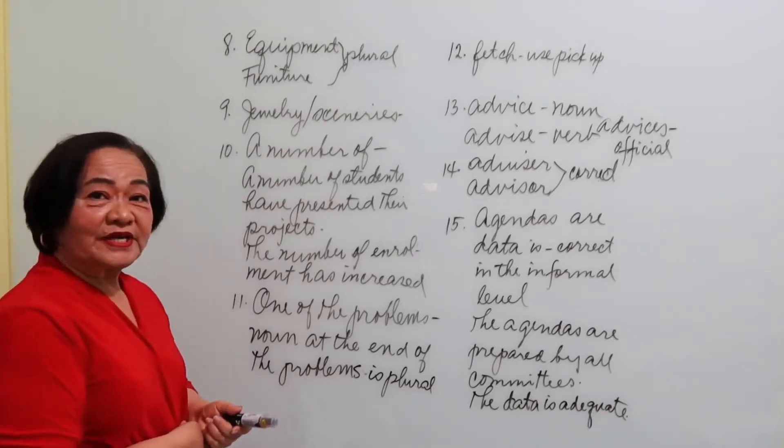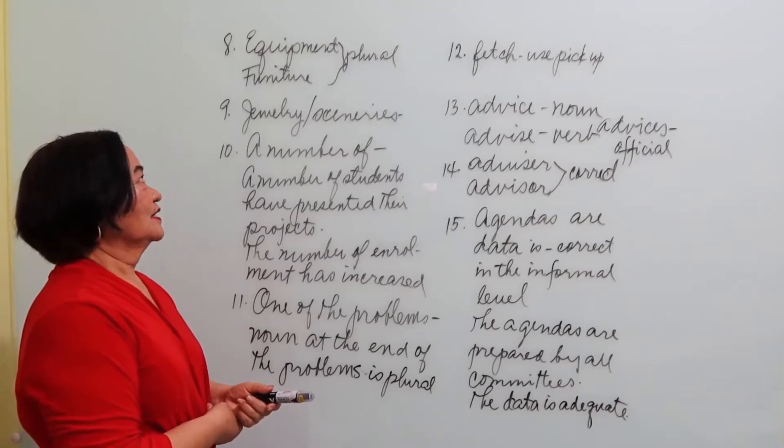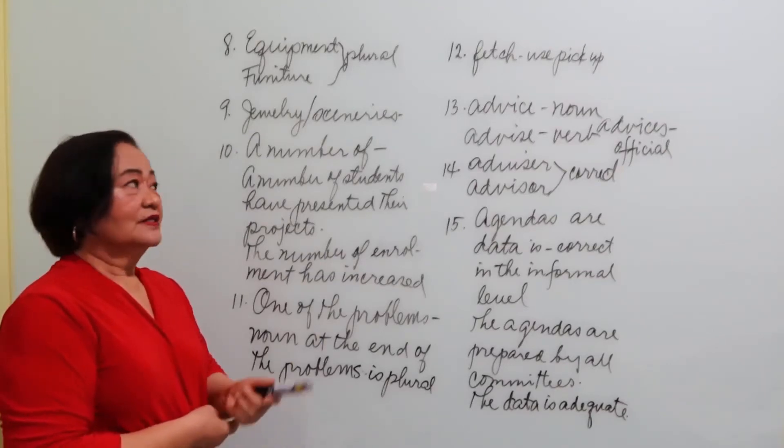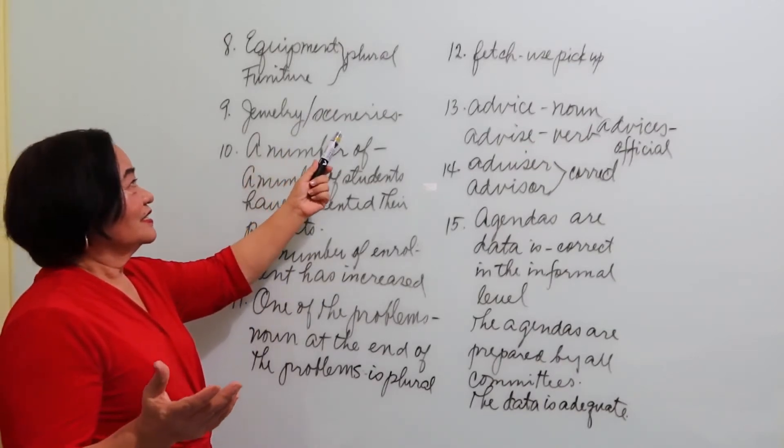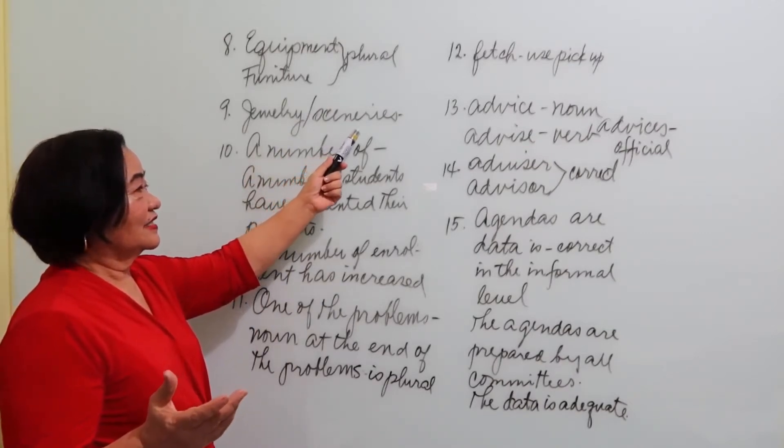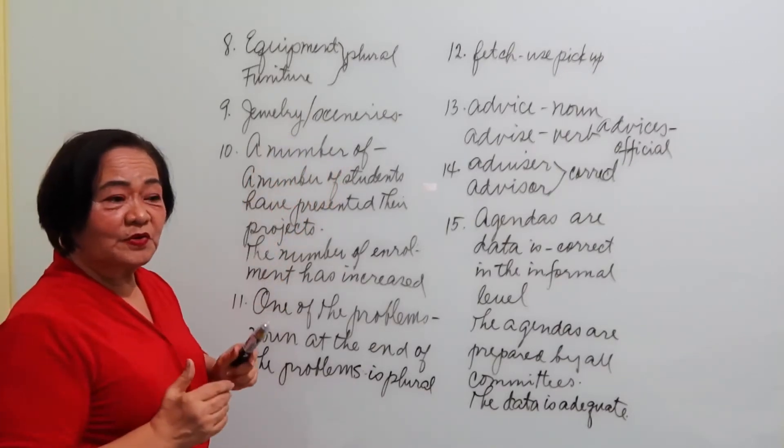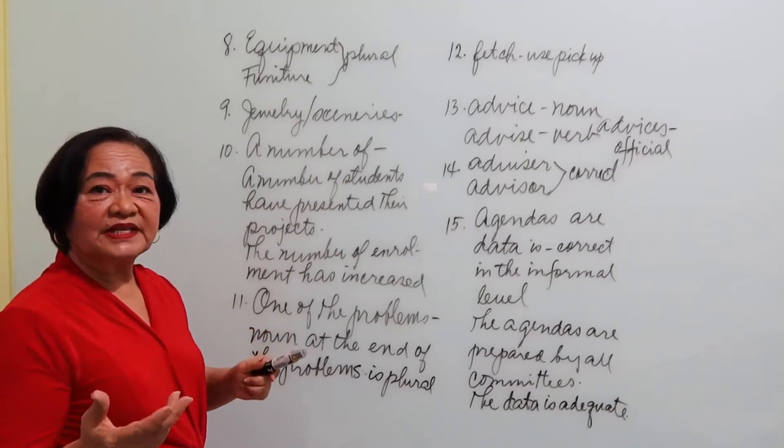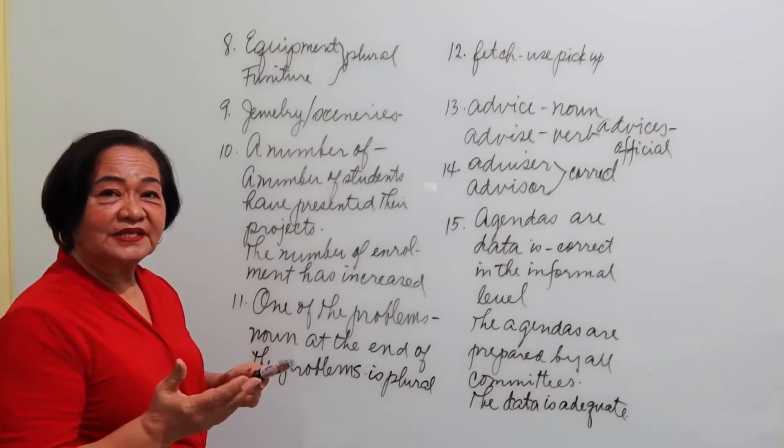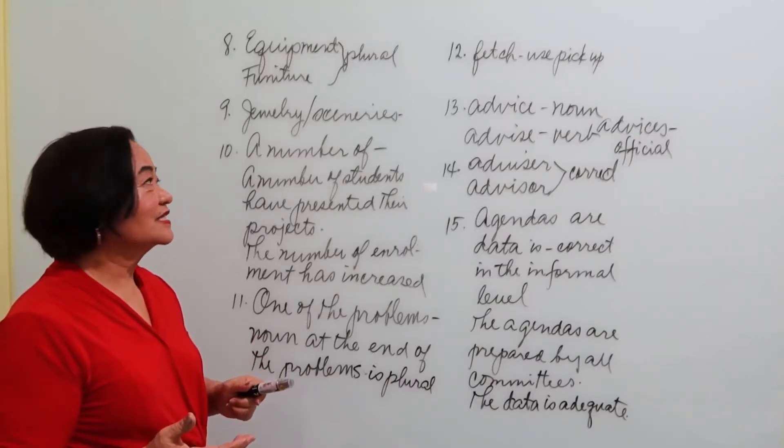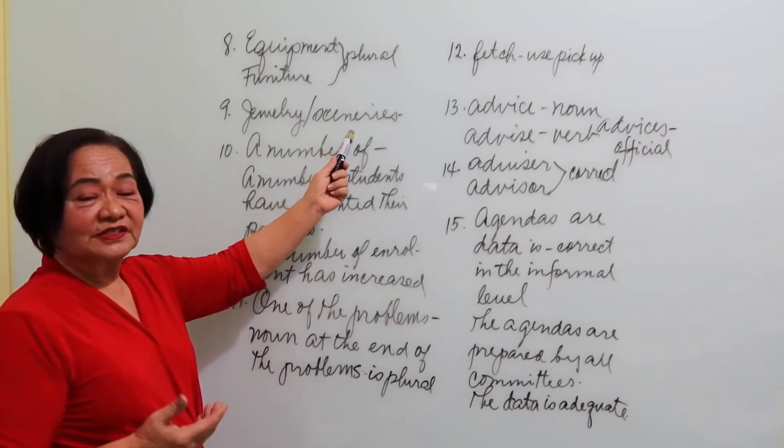Then we have jewelry, like sceneries. Jewelries cannot be jewelries. Like sceneries, jewelry remains jewelry. What's the plural? Pieces of jewelry. Pieces of jewels. Sceneries is allowed.